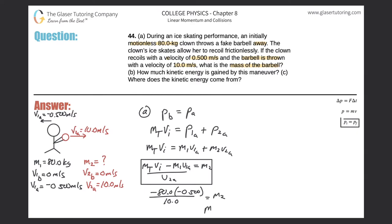which they gave us, 10 meters per second, and it's positive. That will equal m2. So let's throw it into the calculator. Take negative 80 times negative 0.5, divide that by 10. We don't even need a calculator for this, so we got 4.00 kilograms. So that is the mass of this barbell. Okay,